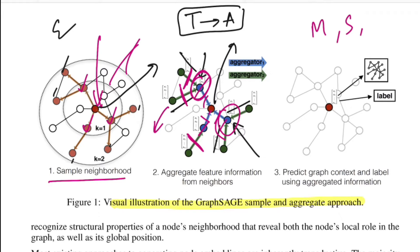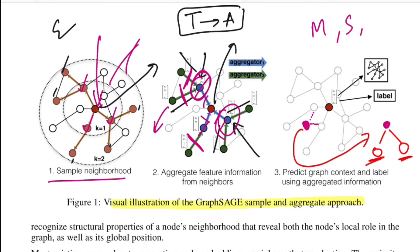Once the model is trained and weights are frozen, the task becomes how to define an embedding for a new node that comes in on the fly. Say a new node arrives and connects to two existing nodes. We define the computation graph for this new node, and since those connected nodes already have embedding representations from training, we pass them through the aggregator function of the k-th layer to get the representation for the new node.